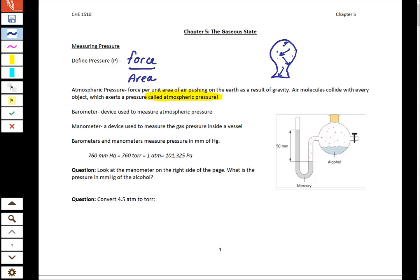We have a device that can measure atmospheric pressure called a barometer. We have one in the lab if you'd like to see it. We have another device that can measure the pressure of contained gases, and that's called a manometer.